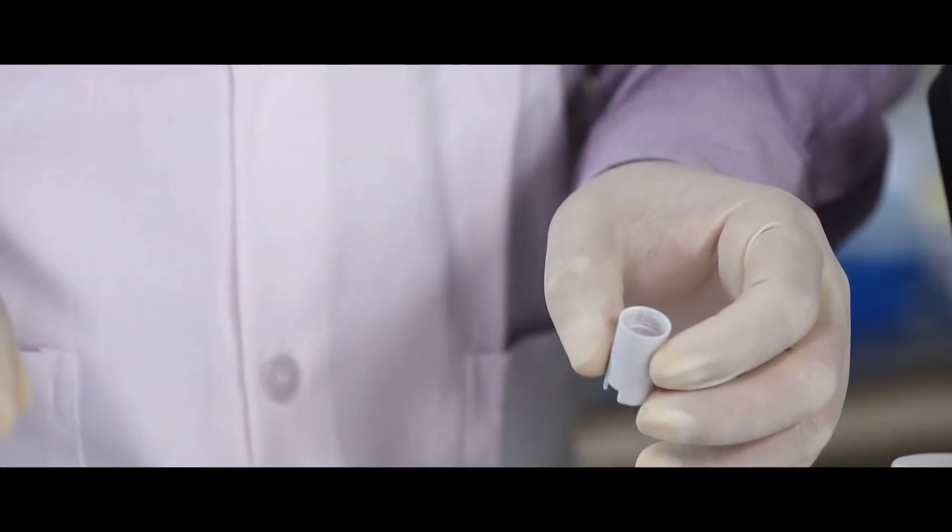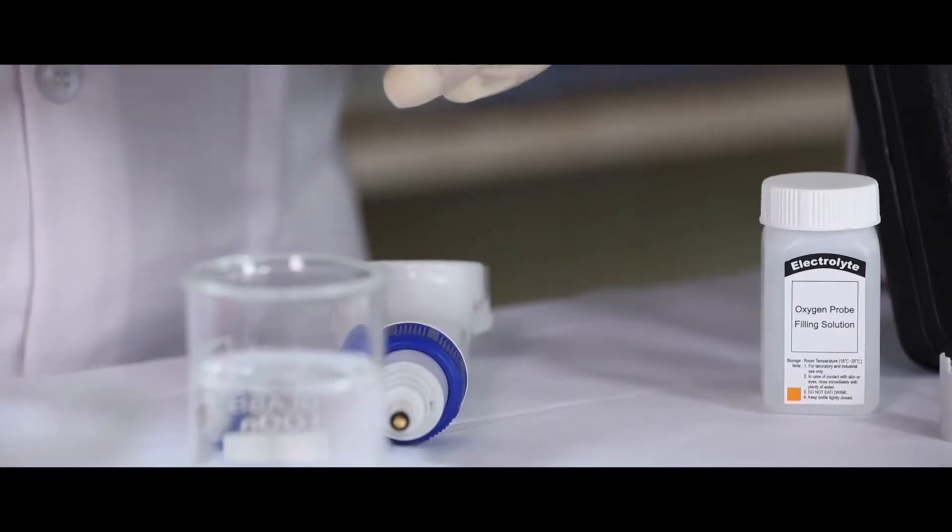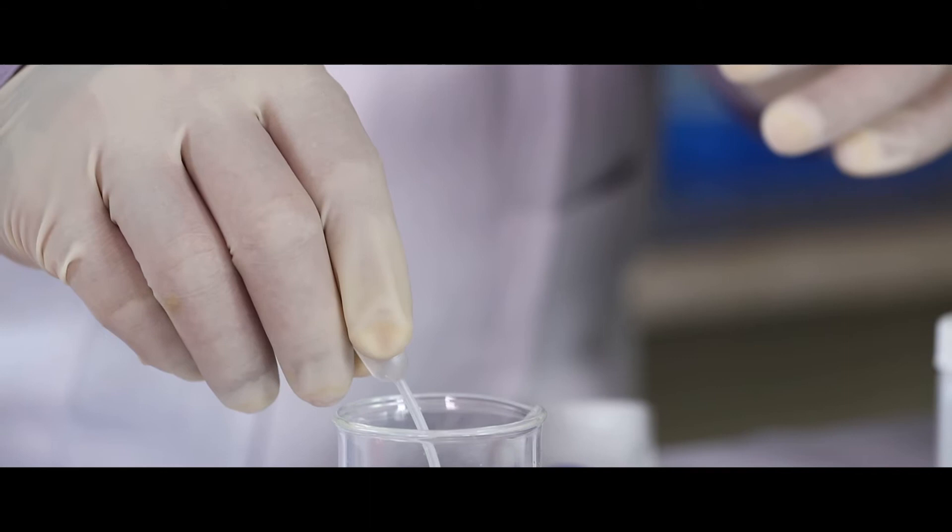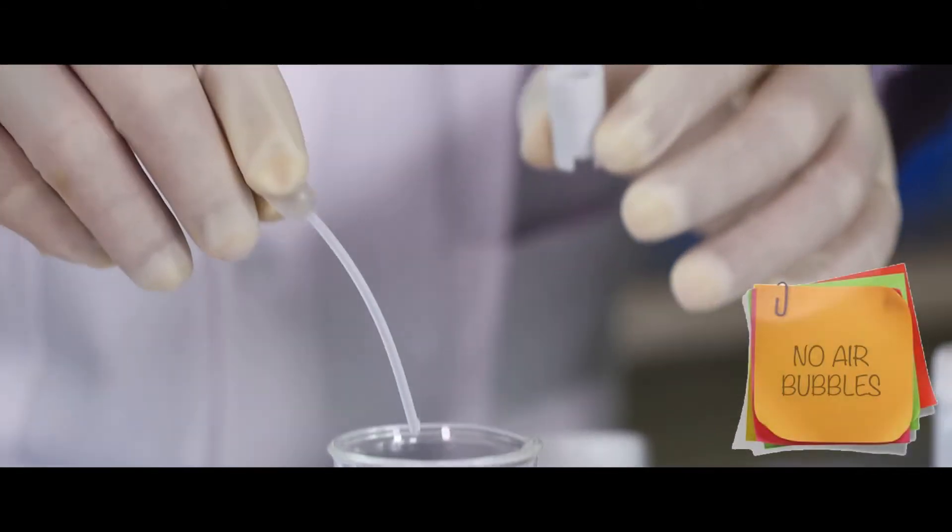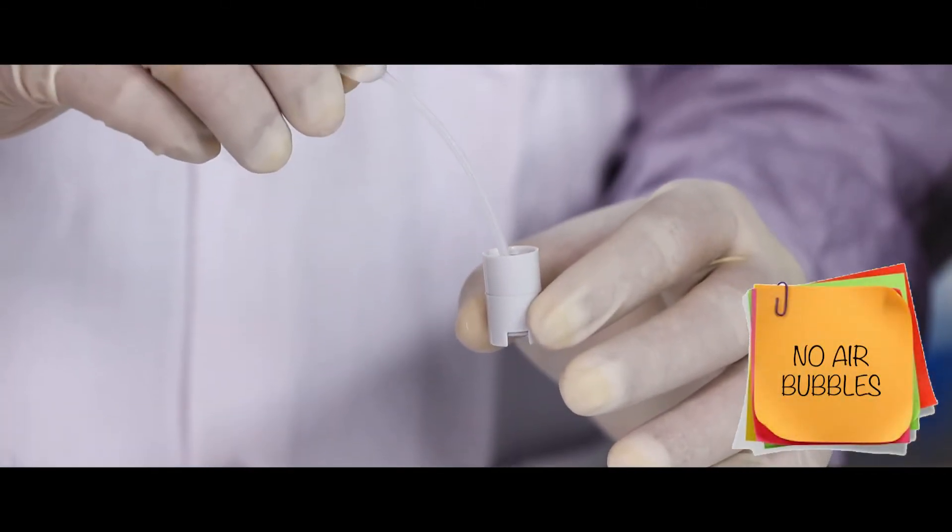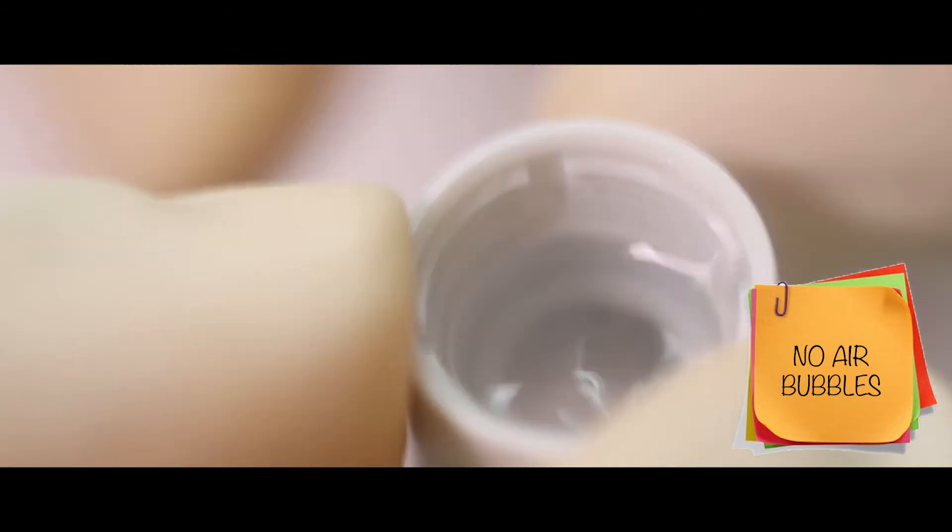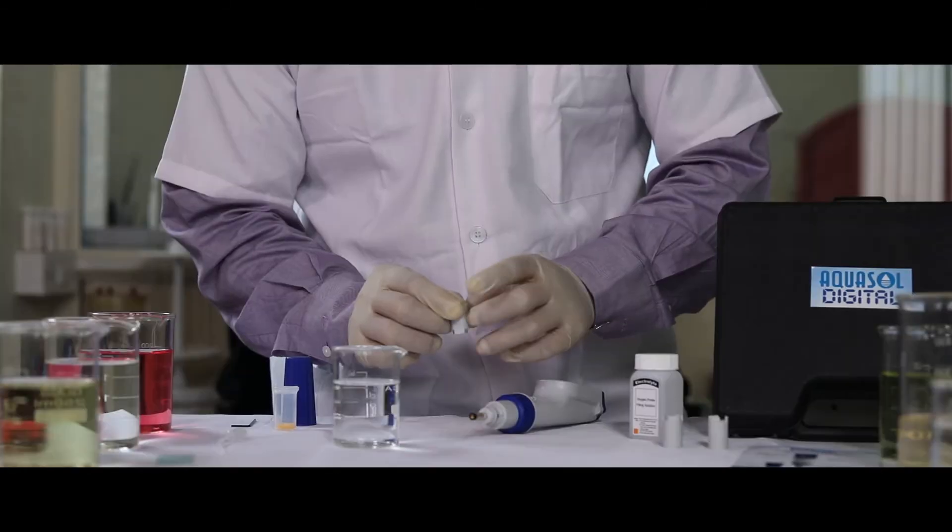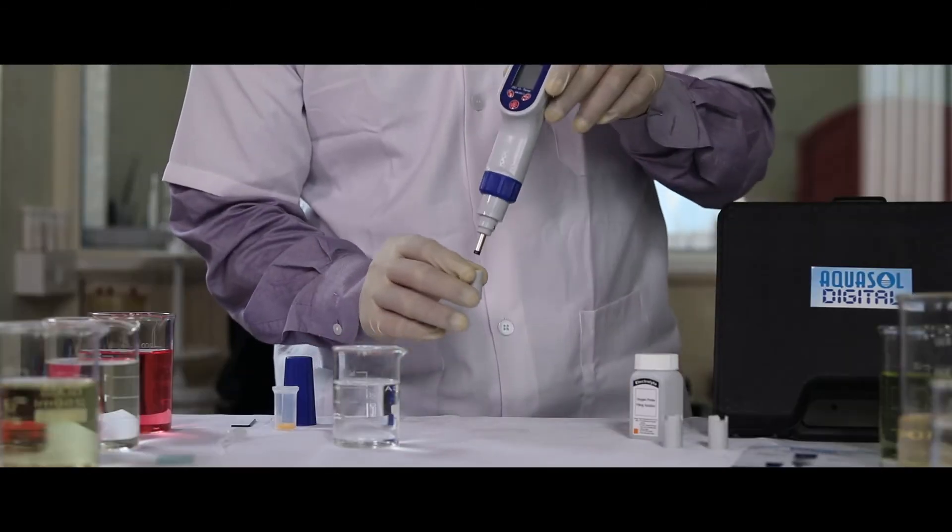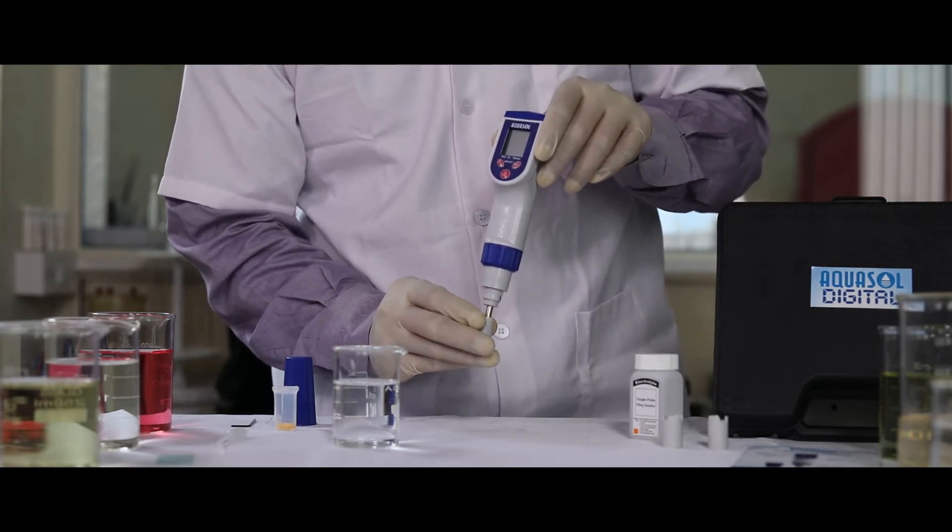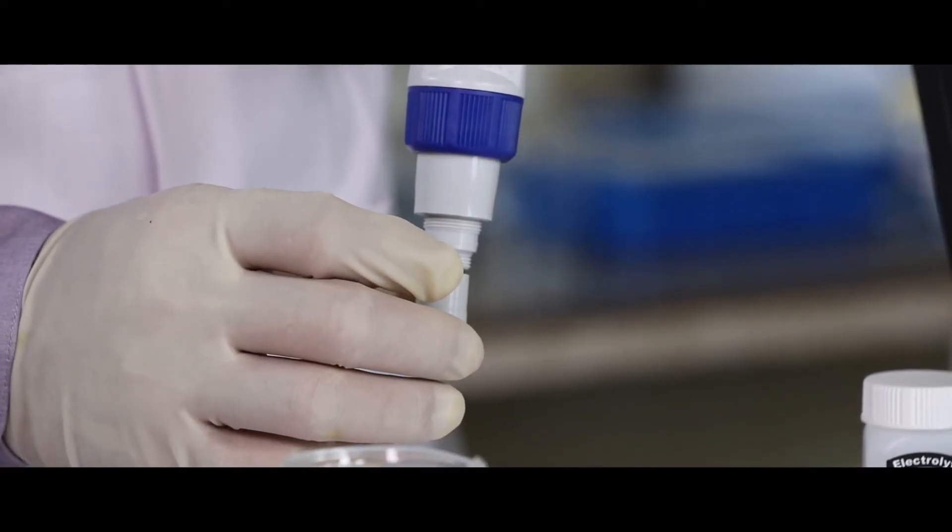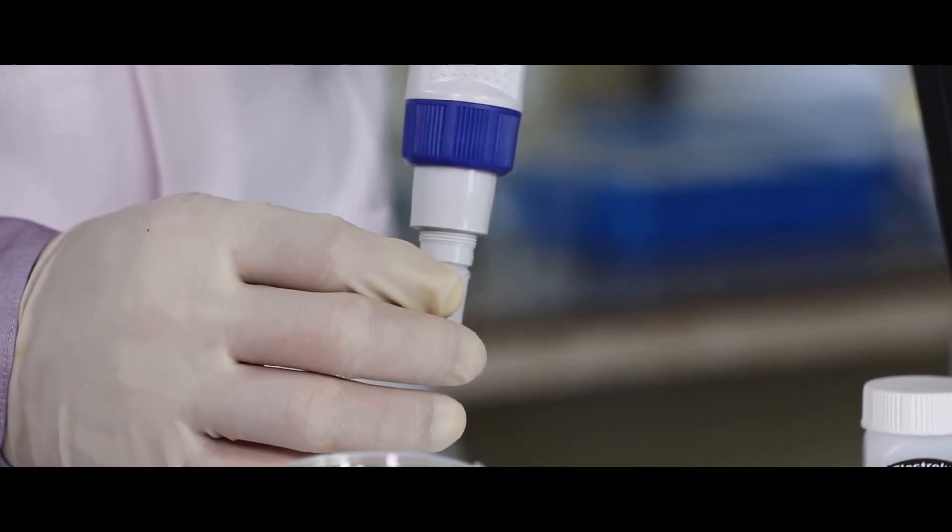Fill the membrane cap with electrolyte solution. Make sure no air bubbles form and fill it to the rim. Carefully insert the probe into the membrane with a little bit of overflow and screw it back slowly until tight.